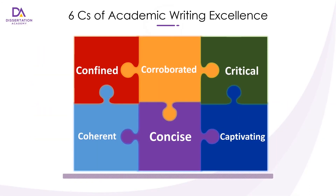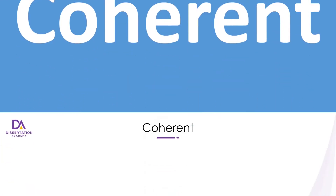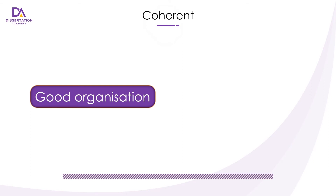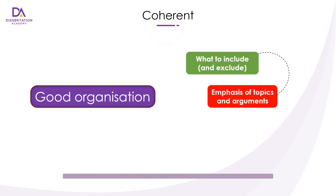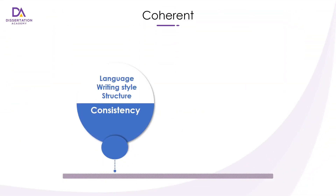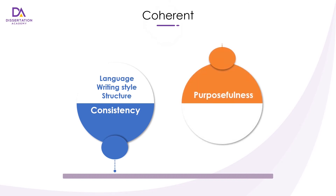Time to look at coherent, our fourth C. In a nutshell, coherence is about good organization. Delivering a well-organized dissertation involves a number of considerations: what to include and exclude, the emphasis given to both topics and arguments, and the order in which the information should appear. Achieving high levels of coherence also requires two principles. First, consistency of language, writing style, and structure. The second principle is purposefulness — explaining the structure and flow of ideas, and showing an awareness of why you are writing it in that way. It's about demonstrating that you did things purposefully, rather than by chance or simply out of instinct.